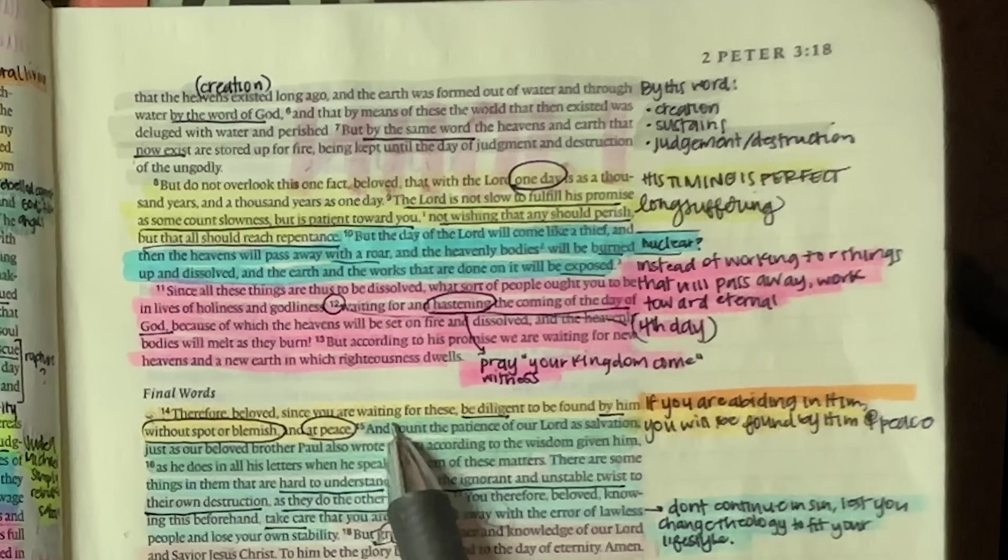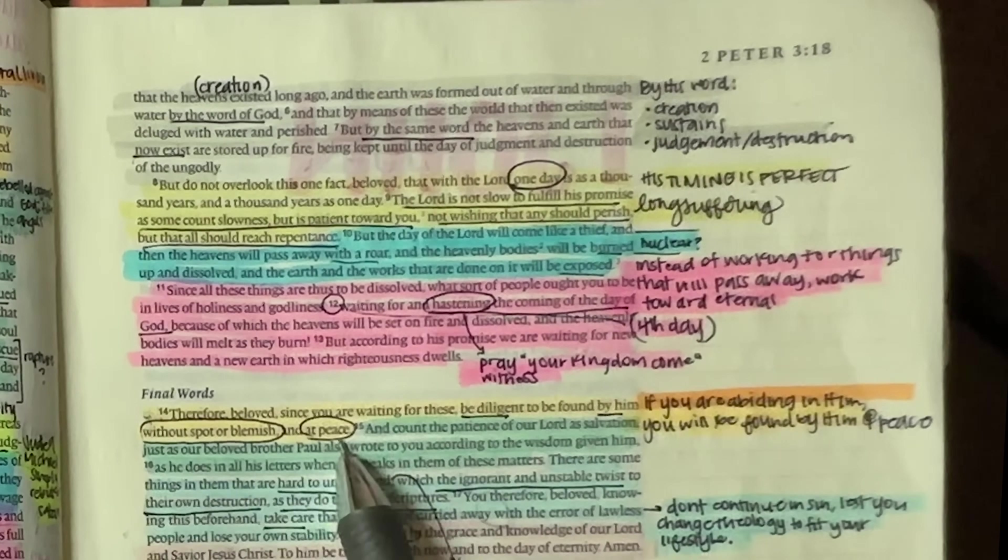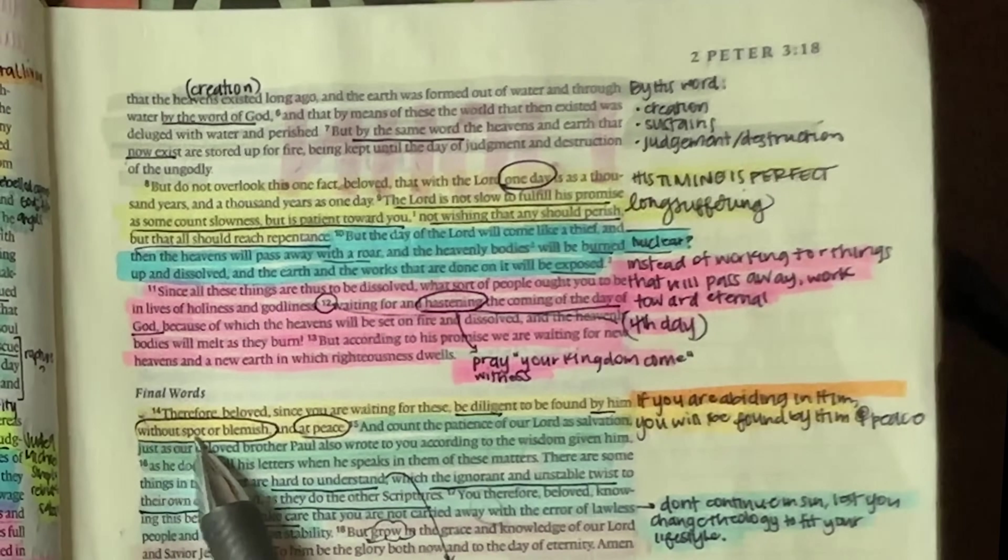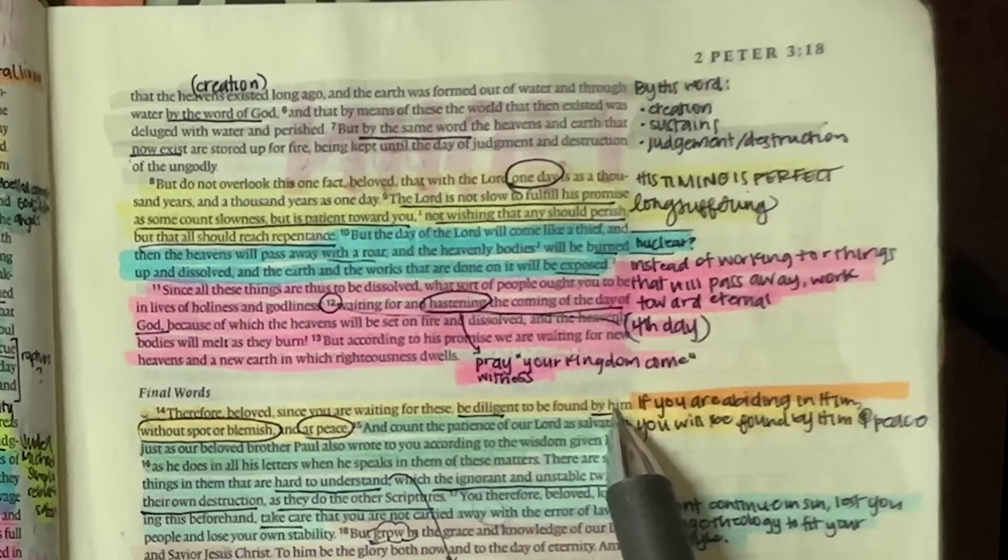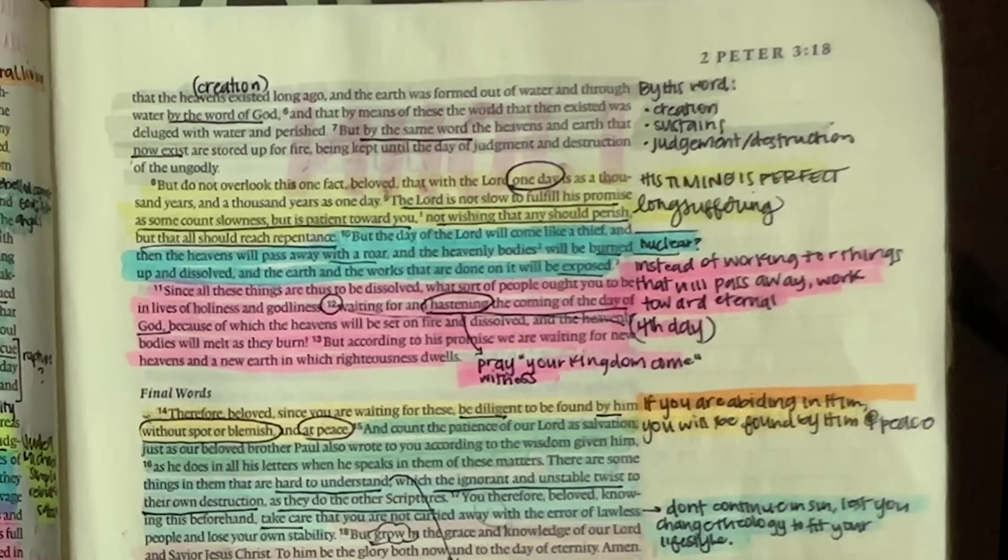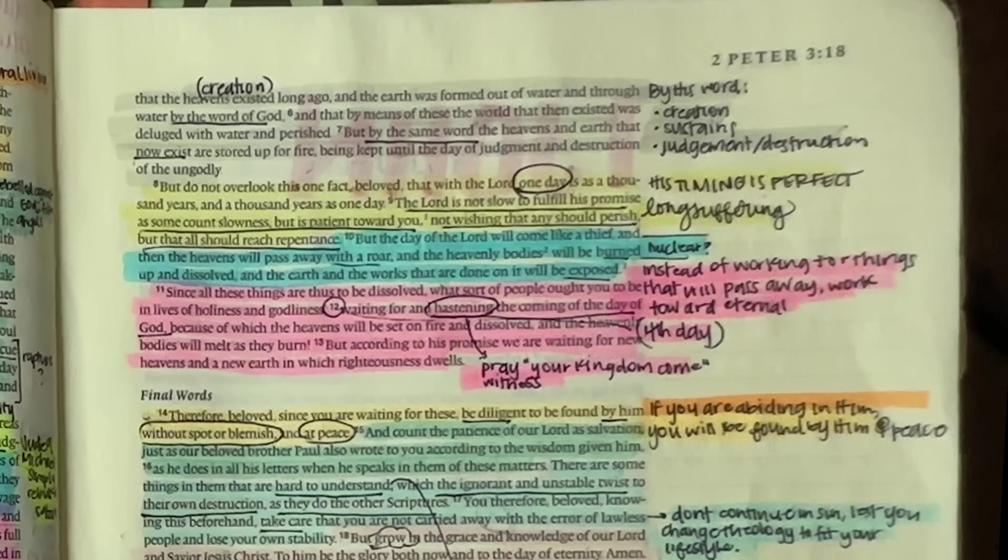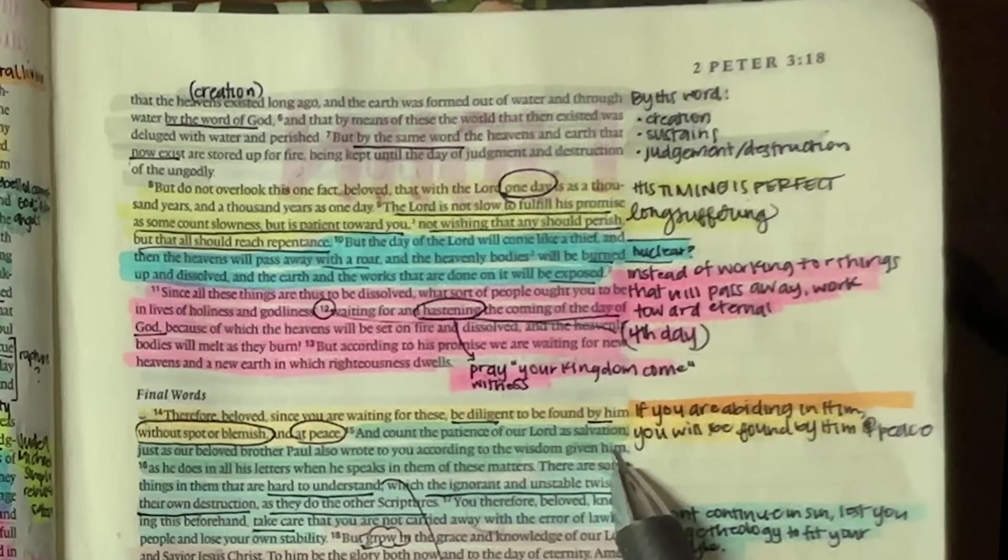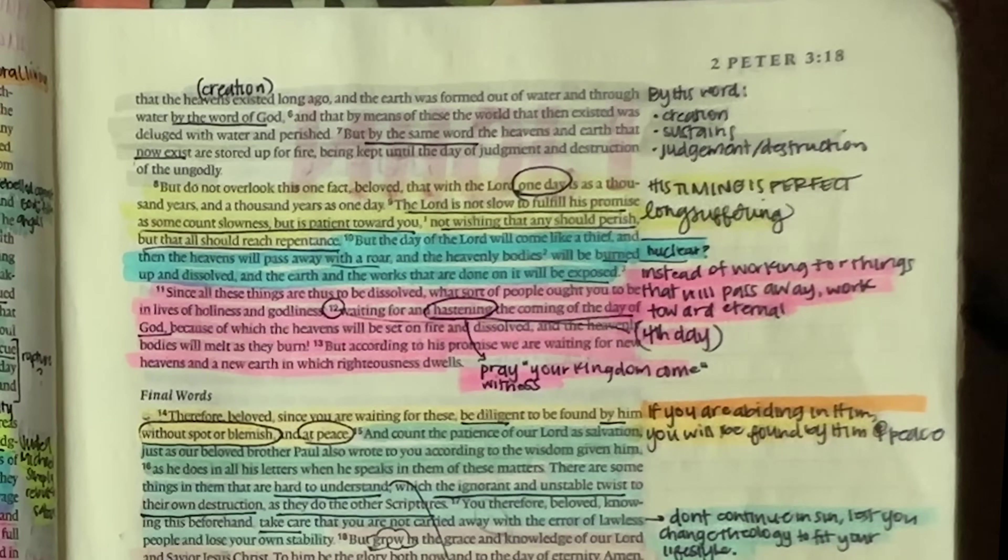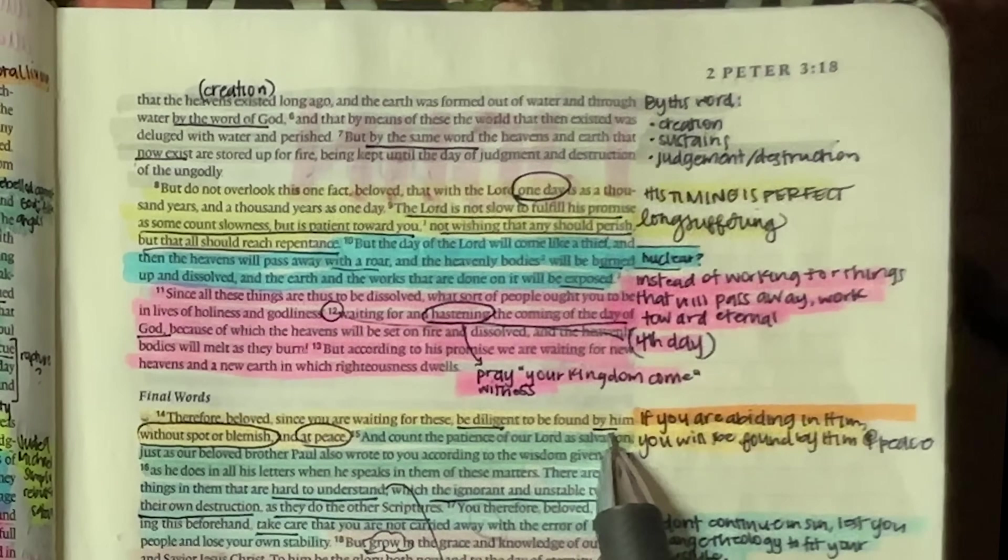Therefore, beloved, since you are waiting for these, be diligent to be found by him without spot or blemish and at peace. Now I know some people would stop here and say, oh boy, if he finds me, I'm definitely not without spot or blemish. But when we are found in him, abiding in him, then we are therefore found without spot or blemish. Like if we are abiding in him, our father is going to say, oh, there you are, my child. And who is he going to see? He's not going to see us in all of our spots and blemishes. He's going to see his son. He's going to see Jesus. So whenever we abide in Jesus and Jesus abides in us or dwells within us, that's who the father sees. So that's how we want to be found. So don't leave him. Don't leave his side.